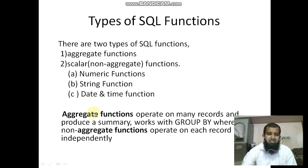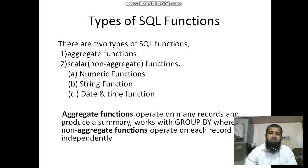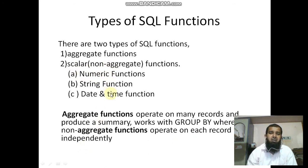Aggregate functions operate on many records — not on one record — and produce a summary. They work with the GROUP BY clause. Whereas scalar functions, or non-aggregate functions, operate on each record independently.